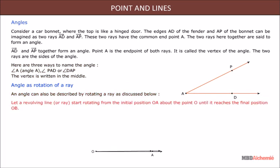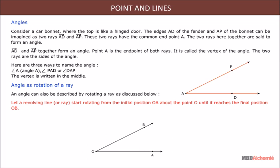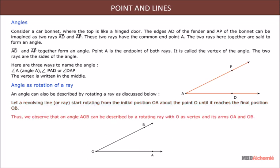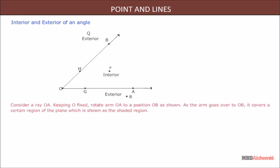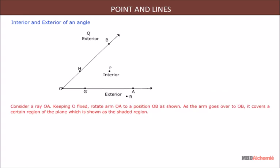An angle can also be described by rotating a ray. Let a revolving ray start rotating from the initial position OA about the point O until it reaches the final position OB. Thus we observe that angle AOB can be described by rotating a ray with O as vertex and its arms OA and OB.